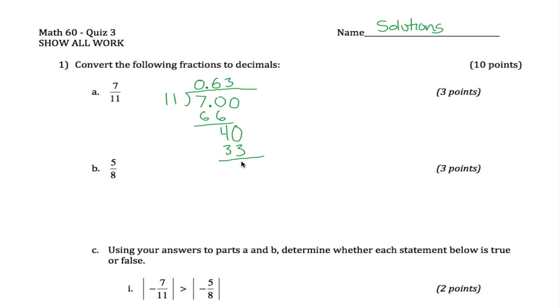40 minus 33, you get 7, and you can bring down another decimal if you want, but if you're kind of clever, what you'll notice is that we're just going to repeat, right? It's the same problem as it started out. It was 11 goes into 7.0, 11 goes into 70. If we brought down another 0 here, we'd have another 70. This 7 and this 7 are the same, so we're just going to keep repeating.